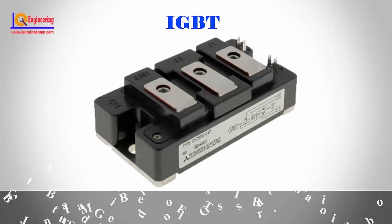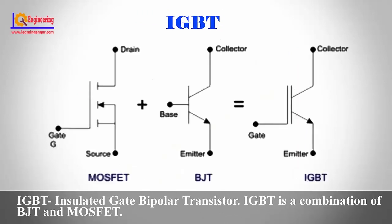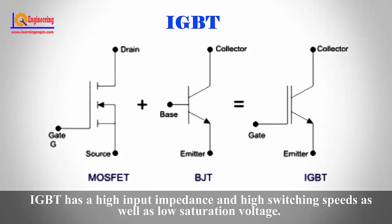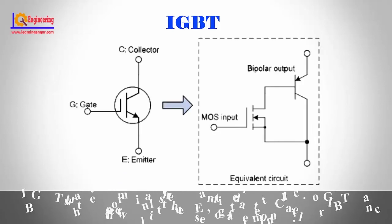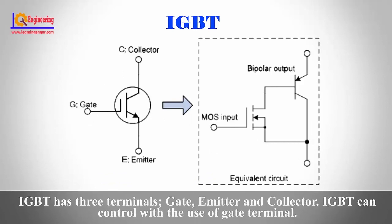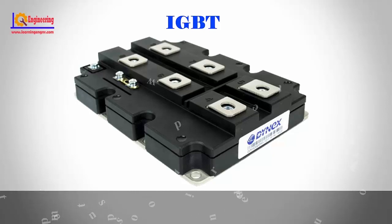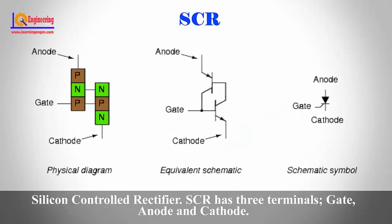IGBT — Insulated Gate Bipolar Transistor — is a combination of BJT and MOSFET. IGBT has high input impedance, high switching speeds, and low saturation voltage. It has three terminals: gate, emitter, and collector, and is controlled via the gate terminal. IGBT is used in inverters, traction motor control, induction heating, and switch mode power supplies.